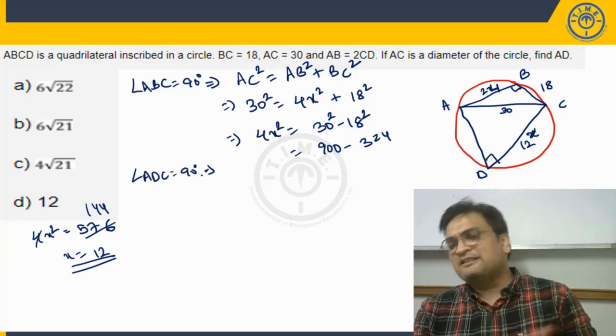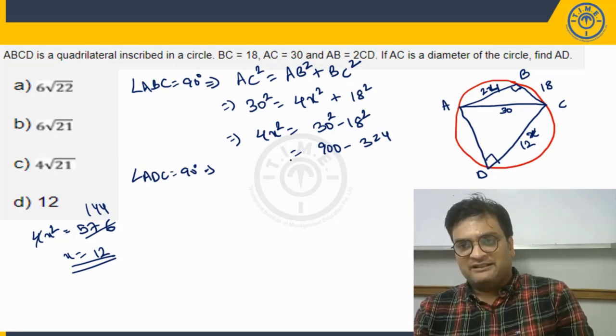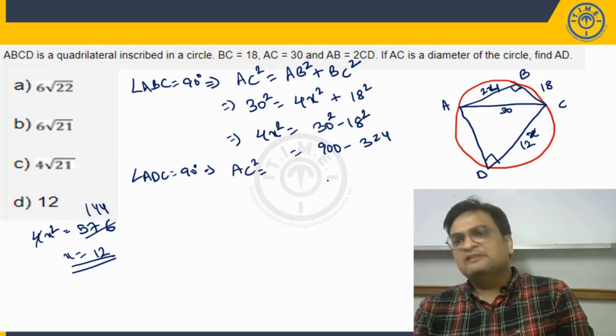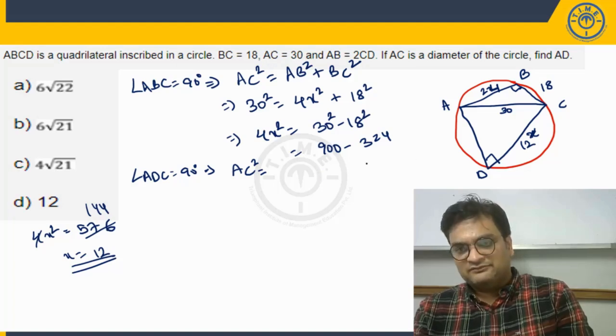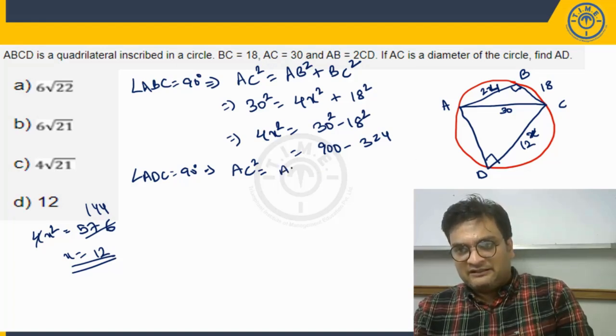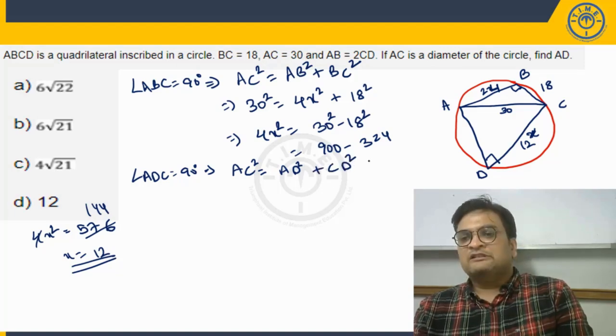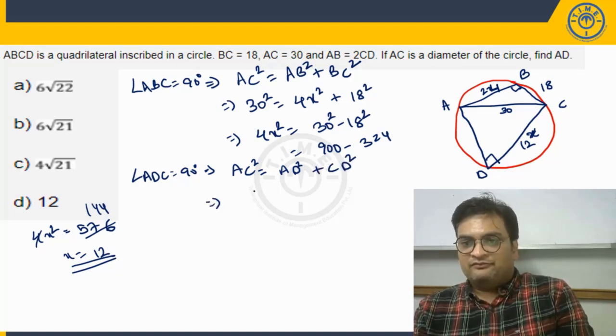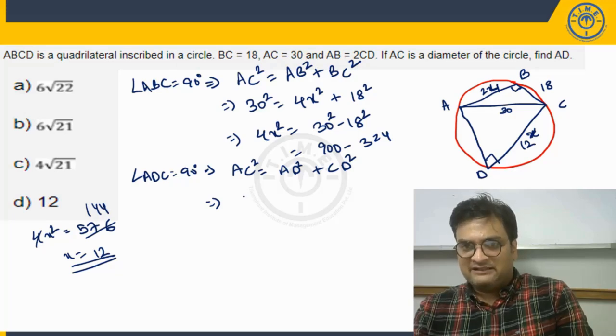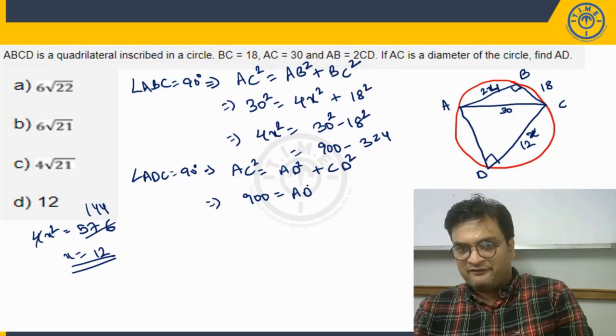Again, apply Pythagoras there. So when you apply Pythagoras theorem there, we get AC square will be equal to AD square plus CD square. So what is AC square? 30 square, 900. AD square, that is what we have to find out, plus CD square, 12 square, 144.